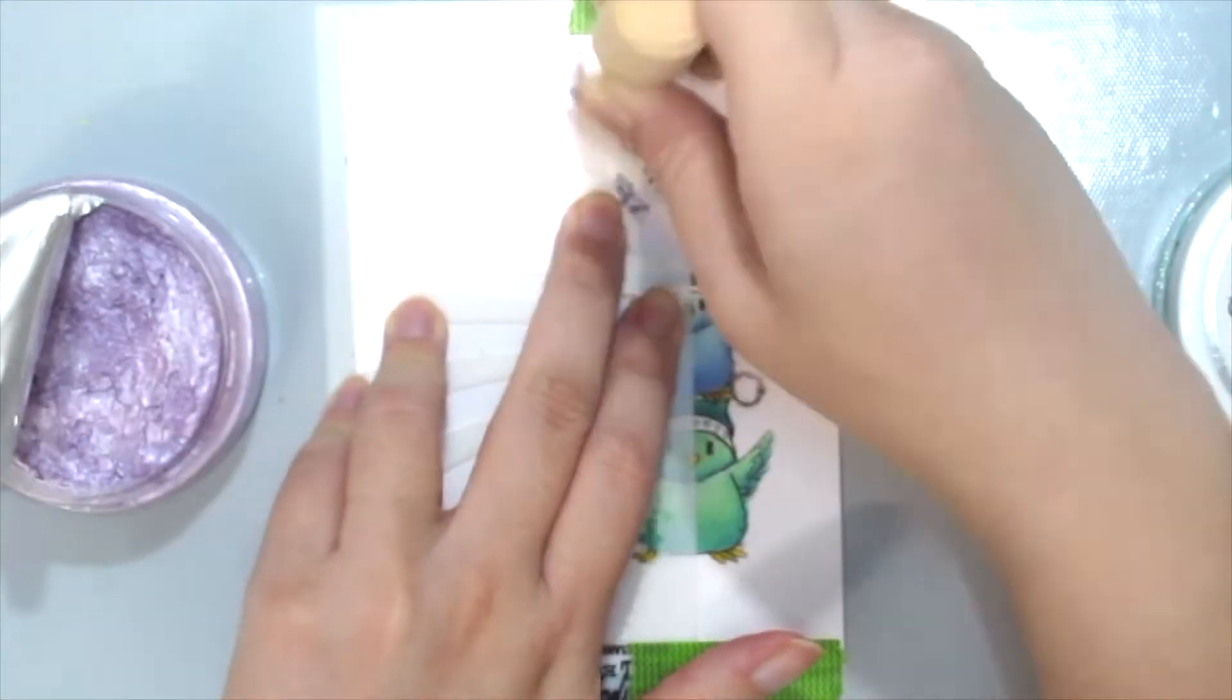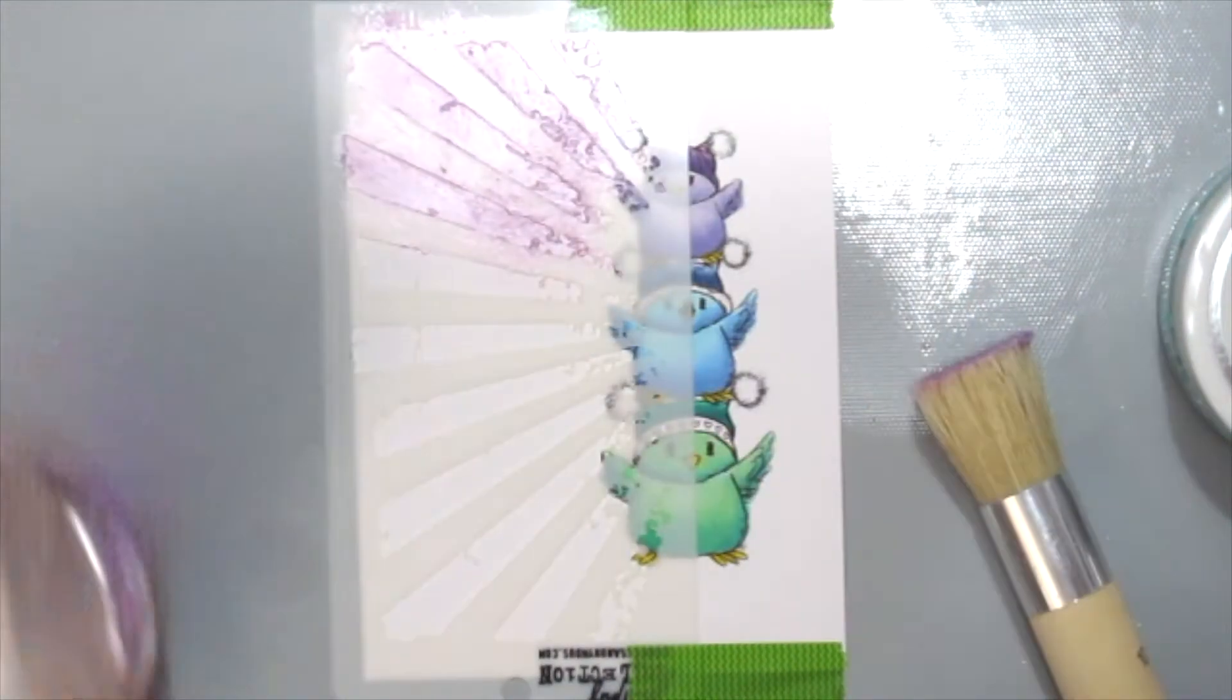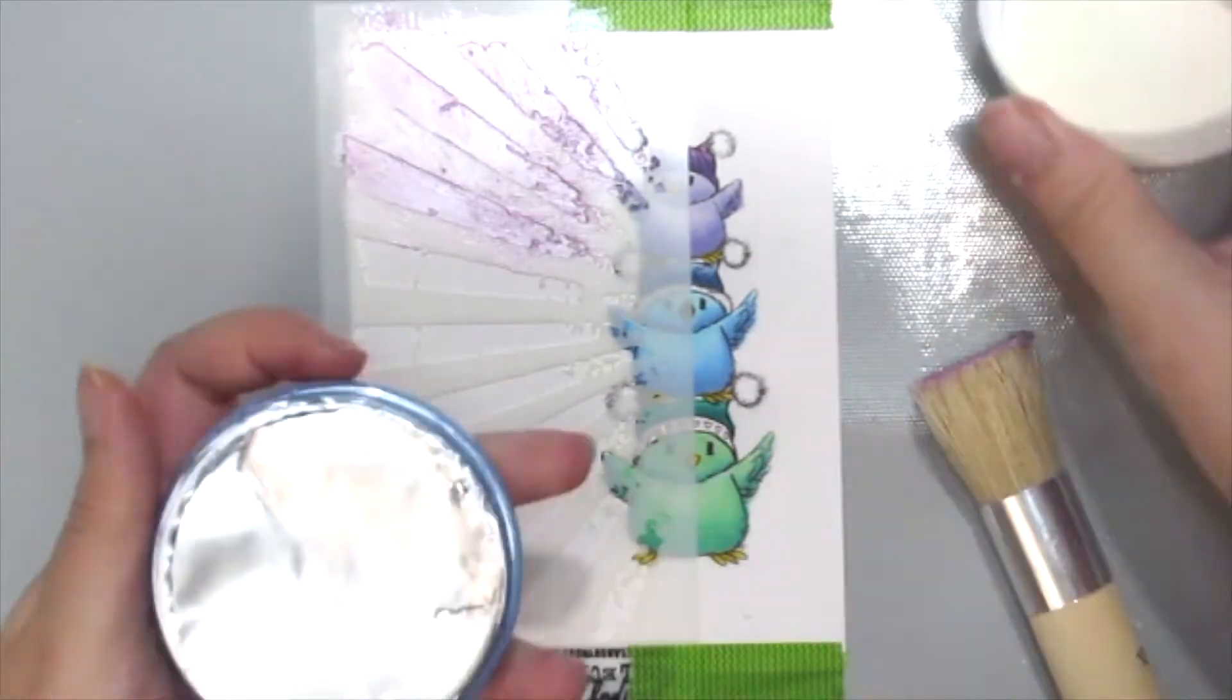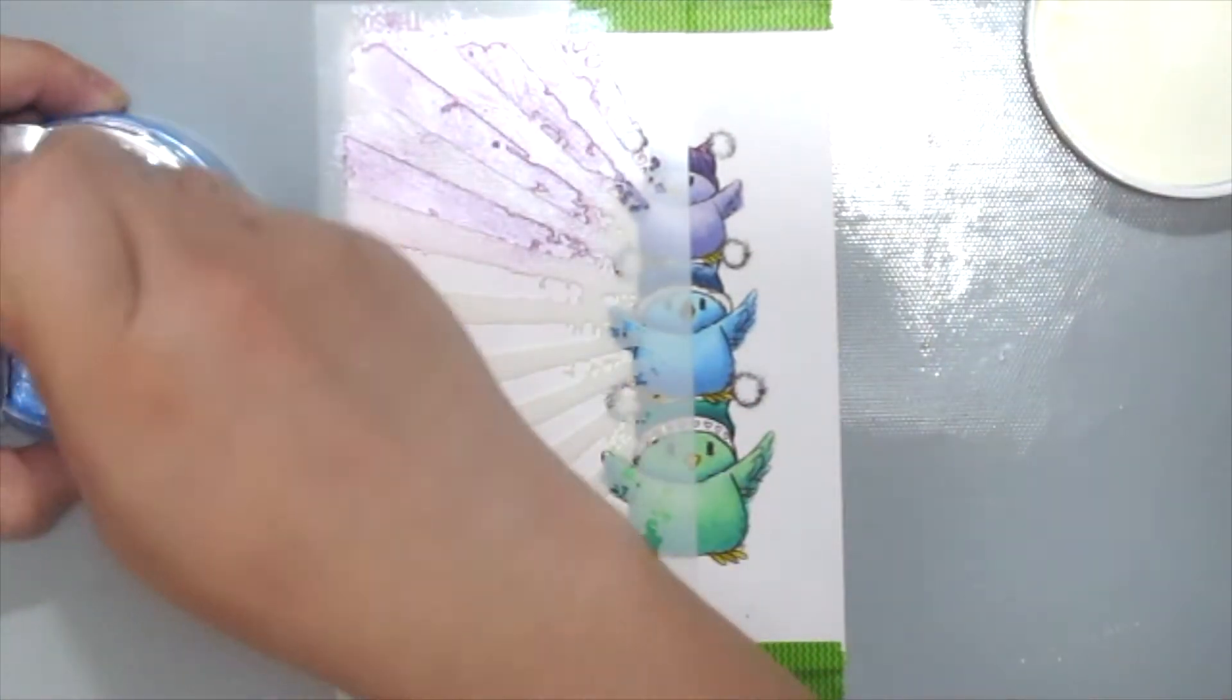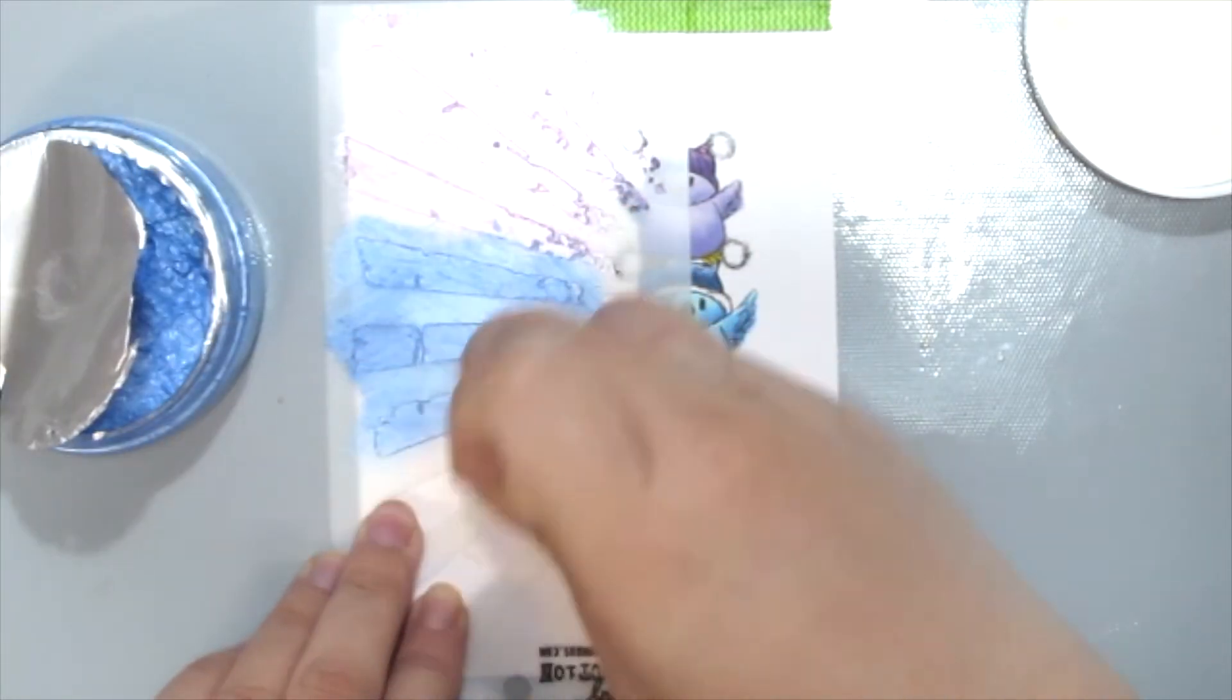Then I'm grabbing the stencil brush and dabbing it into my Nuo Moose Paste, which is the Lilac Lavender color, and then moving on to the Cornflower Blue and finally the Aquamarine color.